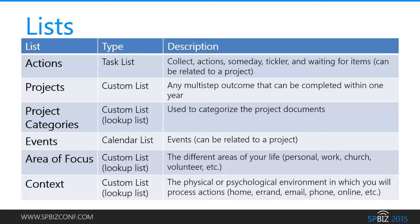The actions list is based off a task list, and this is where you collect all your different types of actions — collect items, someday/tickler, and waiting-for items — which can be related to a project. Your projects list is a custom list where a project is any multi-step outcome completable within one year. Project categories is a lookup list used to categorize project documents. Events is a calendar list that can be related to a project. Area of focus is a lookup list used in projects and actions, representing different areas of your life like personal, work, church, and volunteer. Context — things like home, errand, email, phone, and online — is also a custom lookup list for your actions.